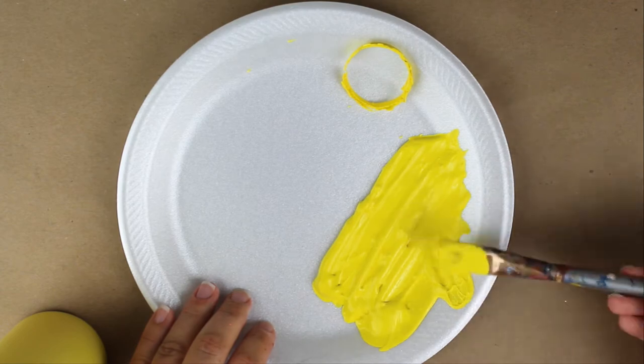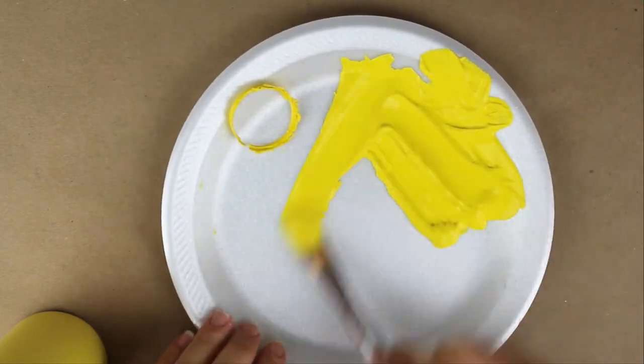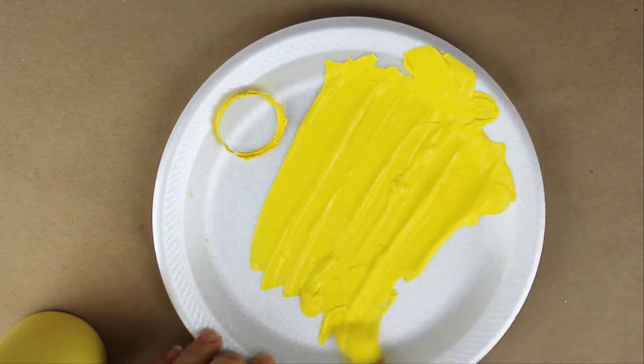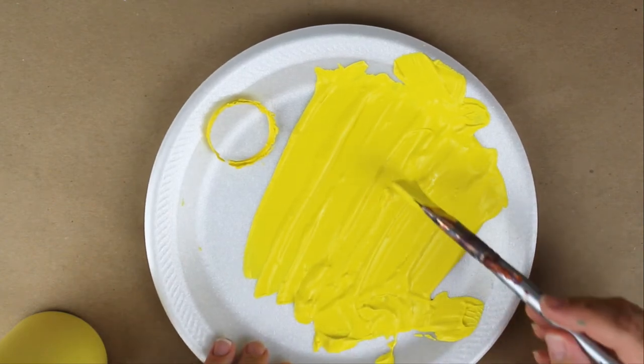Now as I spread this out, you can see that there are some dried bits of paint forming in this bottle. These dried bits are causing the paint to be chunky rather than smooth, so you can tell this paint has gone bad.